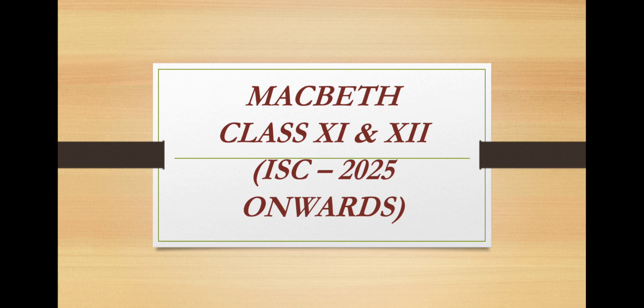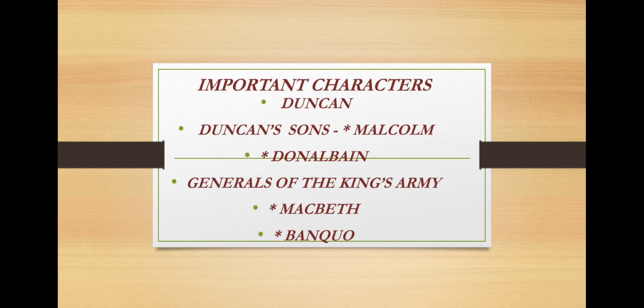Now let me tell you something about the major characters. The first important character is Duncan. He is the King of Scotland — a fair and wise king who is generous with his kingsmen and just with his people. Next we have his two sons: Malcolm, the eldest son, and Donalbain, the youngest son.